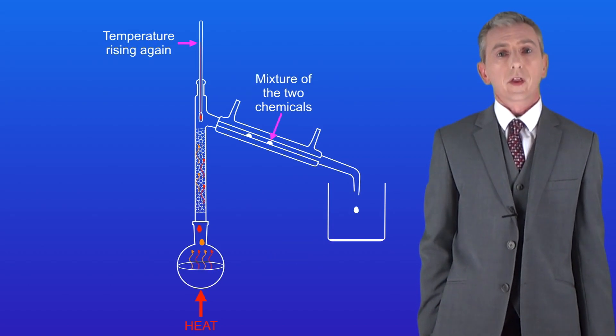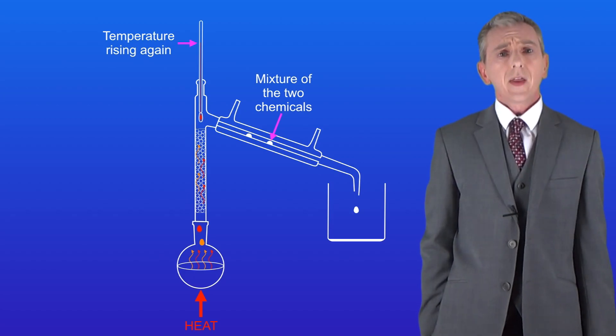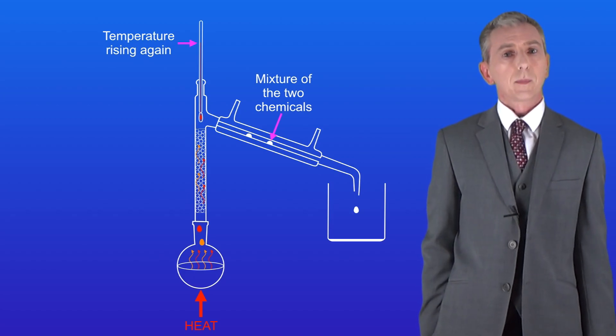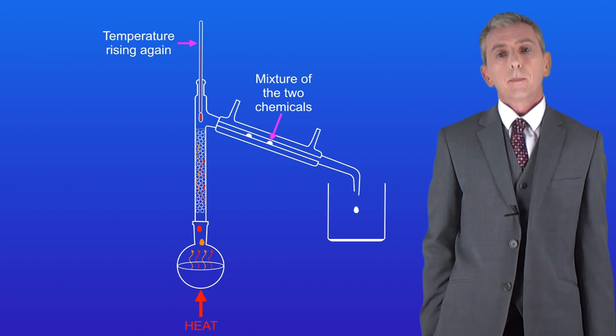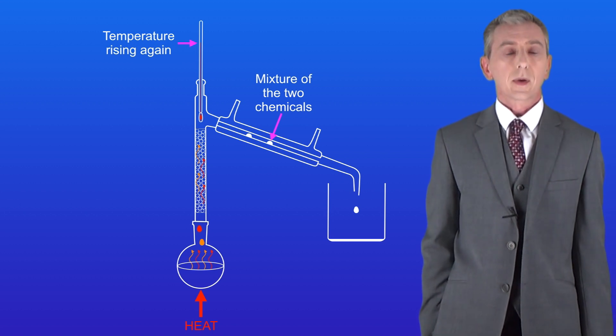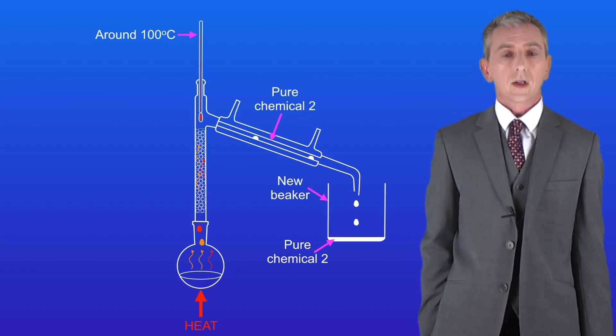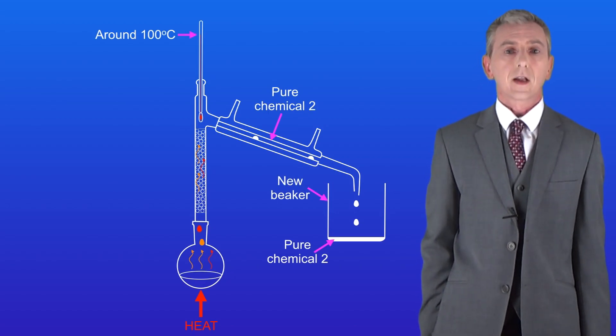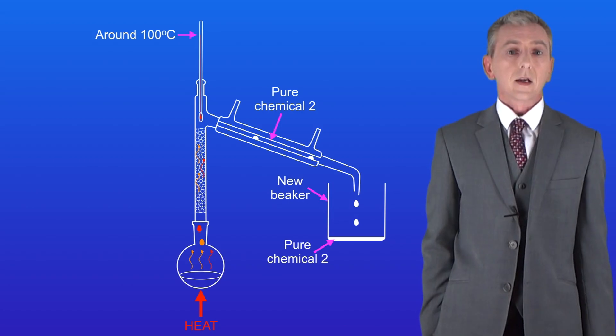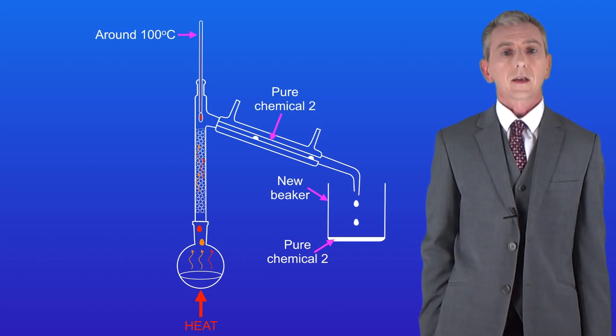After a while the temperature on the thermometer begins to rise again and that means that once again a mixture of vapors is passing into the condenser, but this time it mainly contains the chemical with the higher boiling point. Once the temperature becomes constant, in this case around 100 degrees Celsius, we know that we're collecting a relatively pure sample of the second chemical.